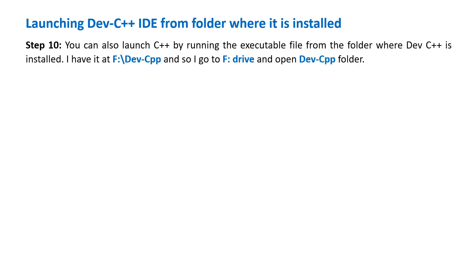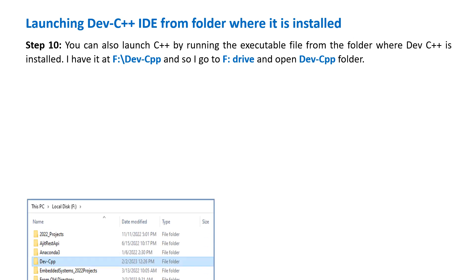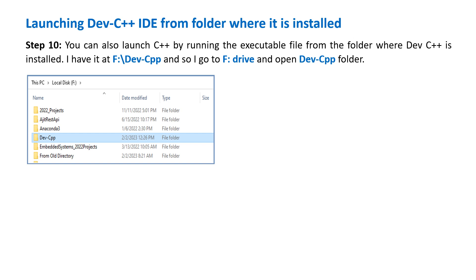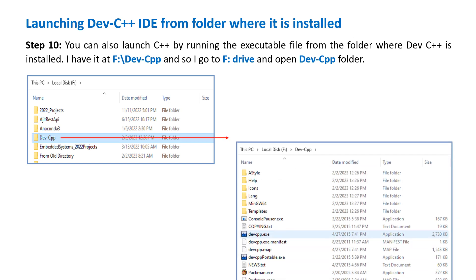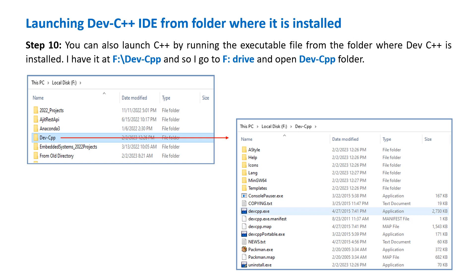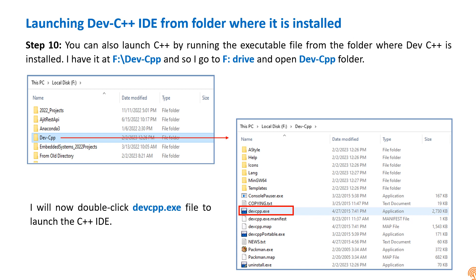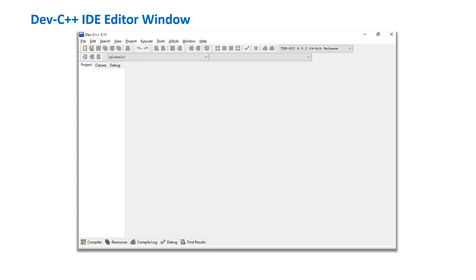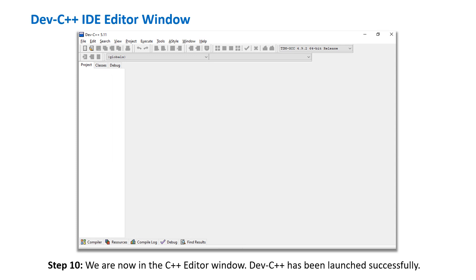You can also launch C++ by running the executable file from the folder where Dev C++ is installed. I have it installed at F:\Dev-CPP, so I go to the F drive and then open the Dev-CPP folder. Let's double-click the devcpp.exe file to launch the C++ IDE. We are now in the C++ editor window — Dev C++ has been launched successfully.